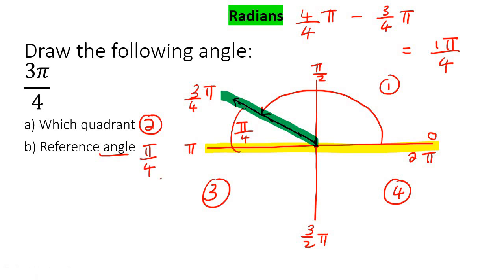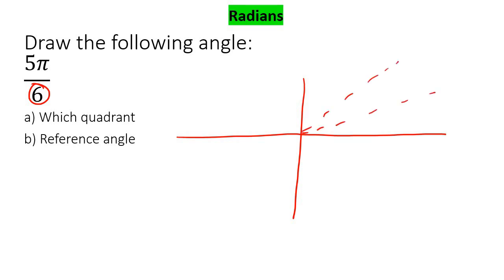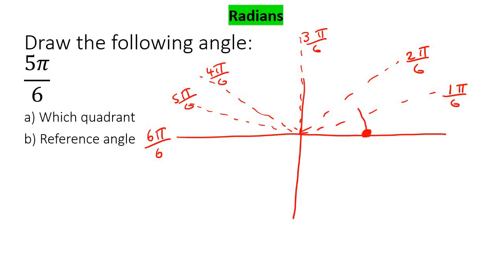Let's try another one. Here the denominator is 6, so break the top part of the quadrant diagram into 6 equal parts. So that's 1, 2, 3, 4, 5, 6. You can think of these as 1π/6, 2π/6, 3π/6, 4π/6, 5π/6, and 6π/6 which equals π since the 6s cancel. So if we want to draw 5π/6, we start at 0 and go all the way to part 5. That's 5π/6, and we are in quadrant 2.